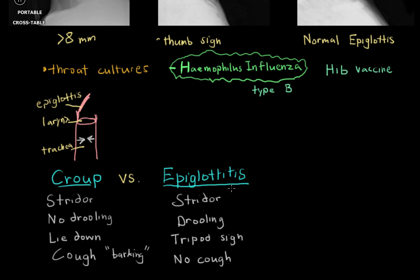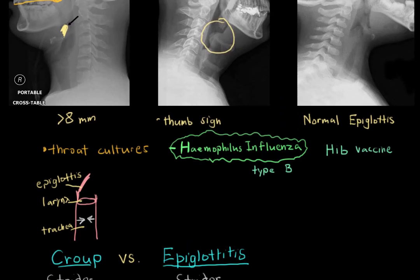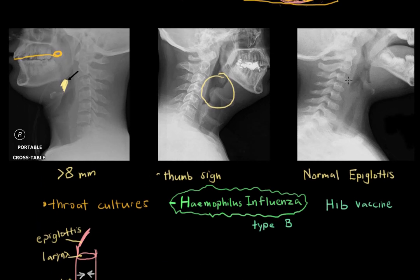Looking at the radiographic image of croup — tracheolaryngitis — you can see all this swollen tissue closing up the airway below the epiglottis. Up at the epiglottis, there's no issue — you have a very clear airway there. That's a major difference in the radiographic image between croup and epiglottitis.